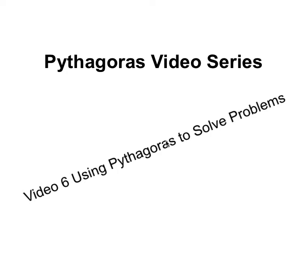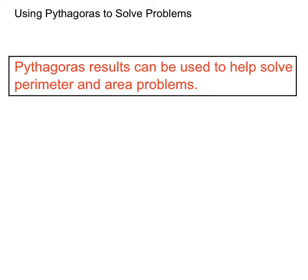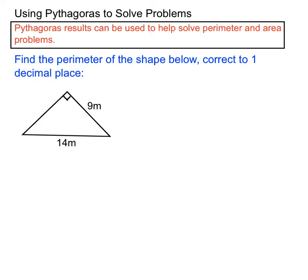This is Pythagoras Video 6, the last of our videos in this series. This one looks at using Pythagoras to solve problems. When we're using Pythagoras to solve problems, Pythagoras results can be used to help solve perimeter and area problems particularly. Let's have a bit of a look at an example.